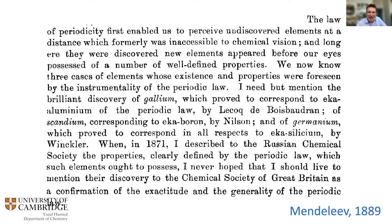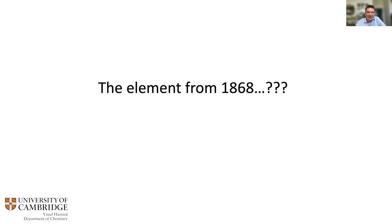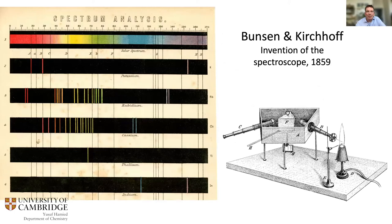Mendeleev still dismissed one element — the one we need to come back to, possibly identified in 1868 using spectroscopy. Going back to Bunsen and Kirchhoff: they recognized their technique might be even more powerful than first thought, stating it 'opens out the investigation of an entirely untrodden field stretching far beyond the limits of the earth or even of our solar system.'